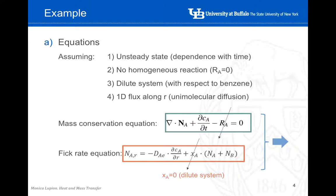We can consider that it's a dilute system, so the concentration of benzene is very small. So the amount of benzene present is small compared to the amount of water. And finally, it's a one-dimensional flux along R, which is spherical coordinates.